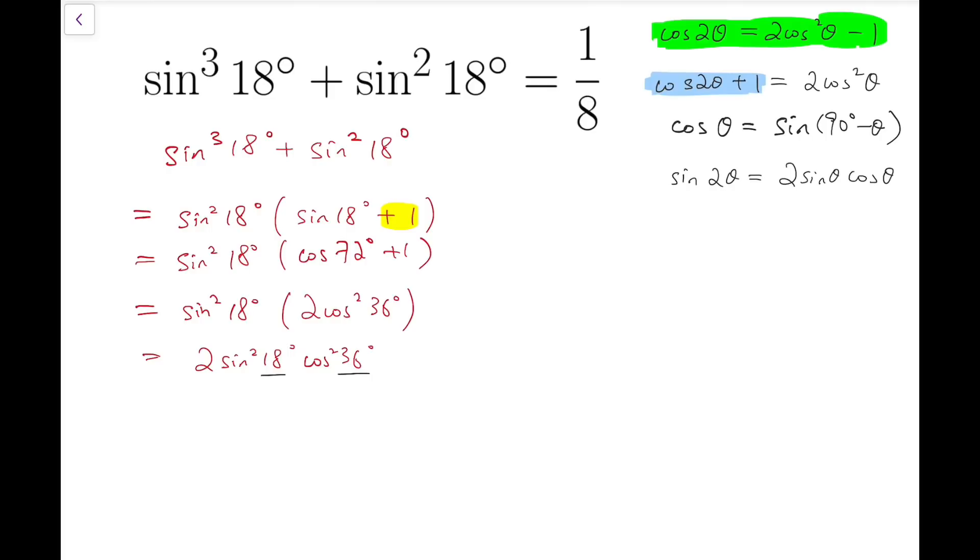It's just that we are having squares of sine and cosine. So why not we square both sides of the identity, which is sine square of 2θ equals 4 sine square θ cos square θ. And so that means 2 sine square θ cos square θ is half of sine square 2θ.